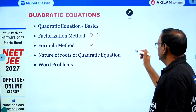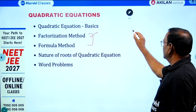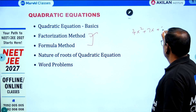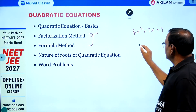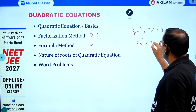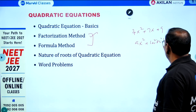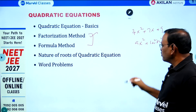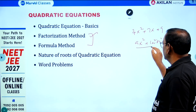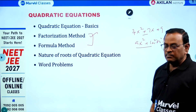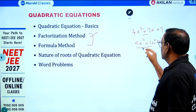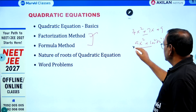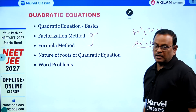Quadratic equations with constant algebraic coefficients and those with numerical coefficients — depending on the situation, apply either the formula method or factorization. For equations with algebraic coefficients, always follow the formula method. For numerical coefficient equations, you can use either factorization or formula depending on the question.